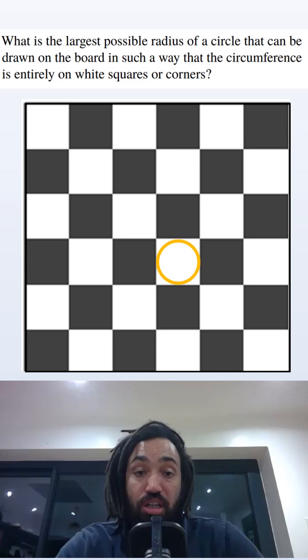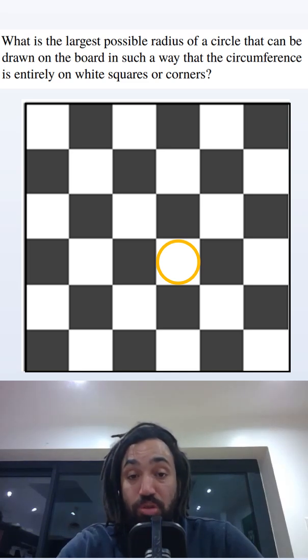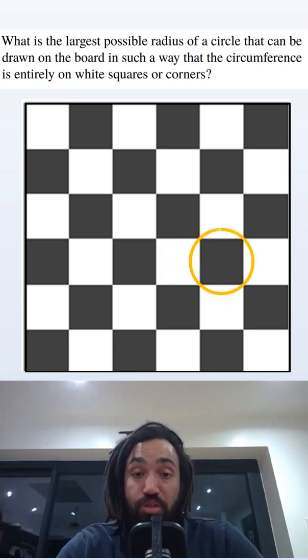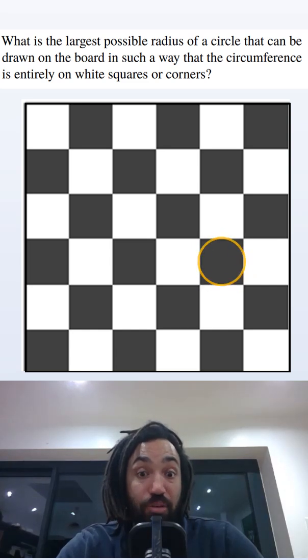I might start by drawing a circle inside of a white square but that's not particularly big, I'm sure we could do better. I could center it around a black square which goes through four corners. Again I think we could do better.